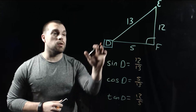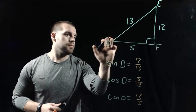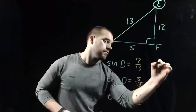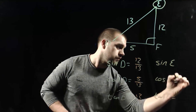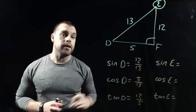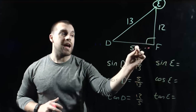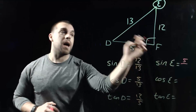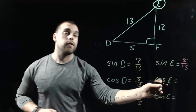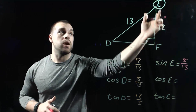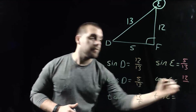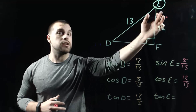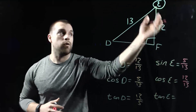Now shifting our focus up to angle E. For the sine of E, opposite over hypotenuse — the opposite side is now 5 and the hypotenuse is still 13. For cosine of E, adjacent over hypotenuse — right next to E is 12, and the hypotenuse is 13. For the tangent of angle E, opposite over adjacent — that's 5 over 12.